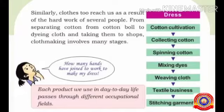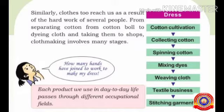These are the different stages required for making clothes. Once more, children, say along with me — what are the different stages of making clothes? Cotton cultivation, collecting cotton, spinning cotton, mixing dyes, weaving clothes, textile business, and the last one — stitching garments. Garments means clothes.